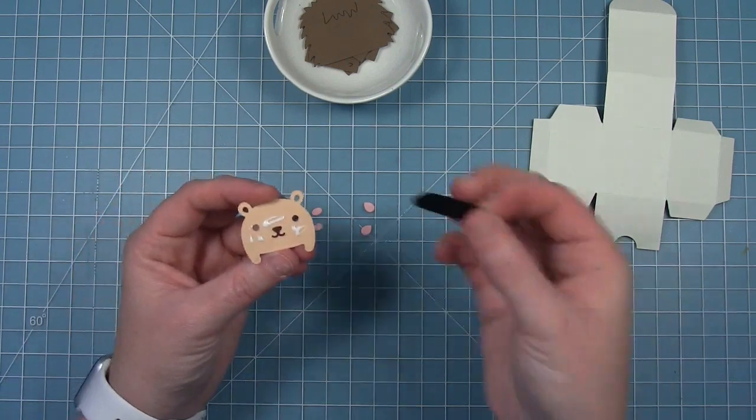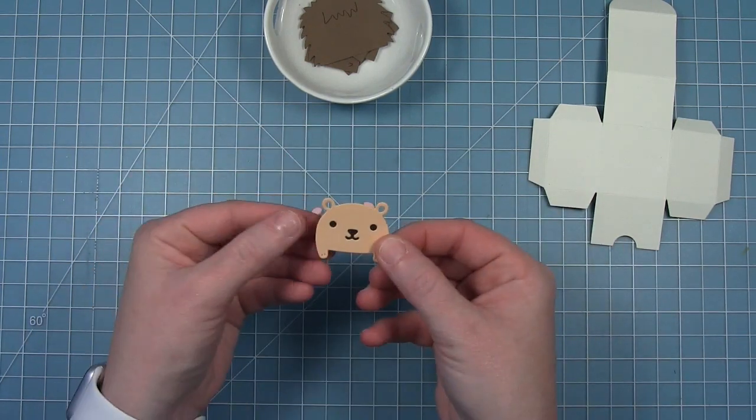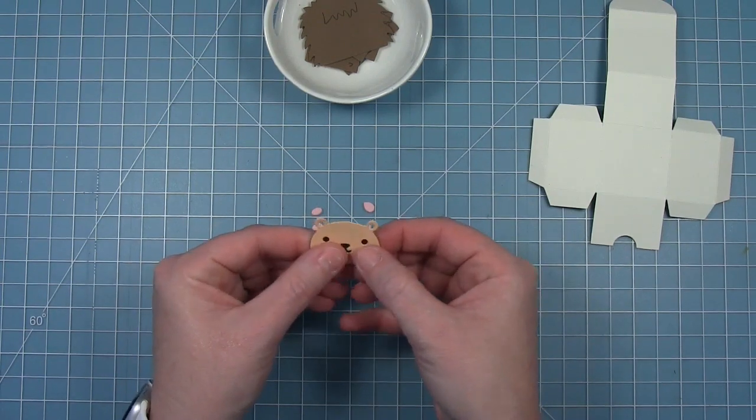I'm going to start by assembling the face of my little hedgehog here. I'm layering that piece of black behind his eyes and his mouth and his nose.